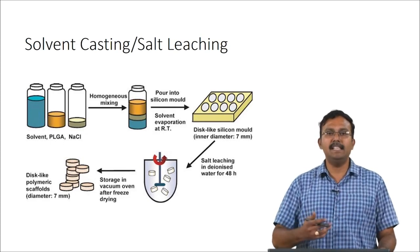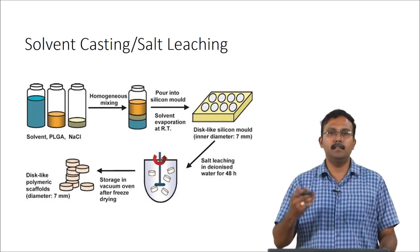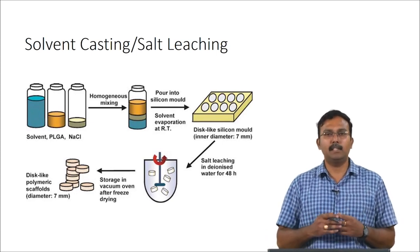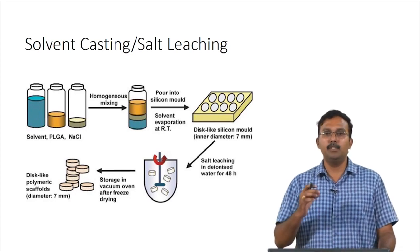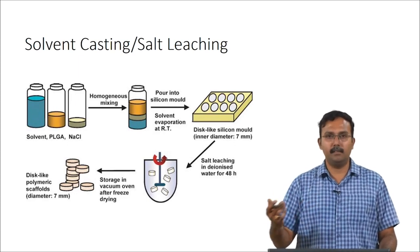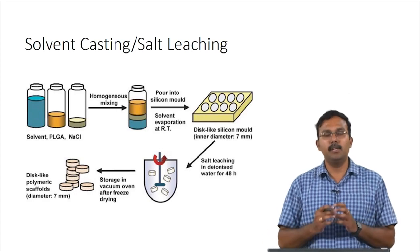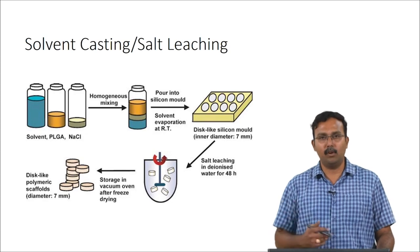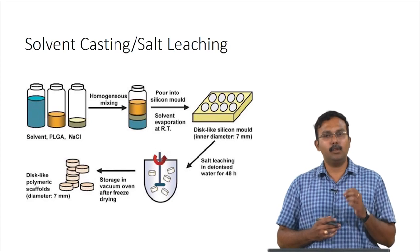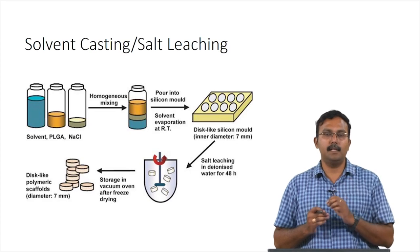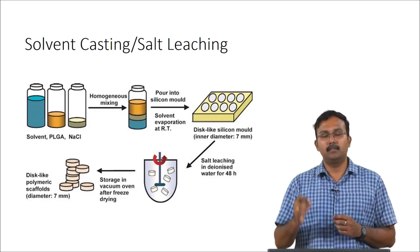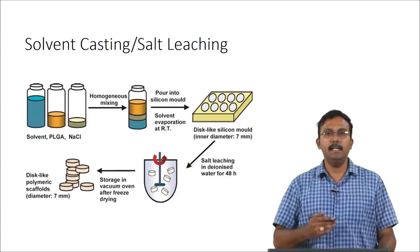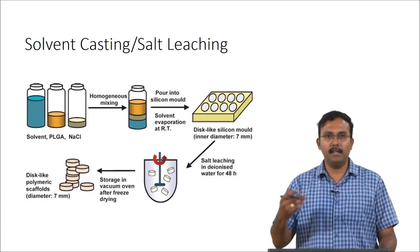The next step is to leach this salt using DI water. You place the salt-polymer scaffold into DI water and mix it for 48 hours. By doing this, the salt will actually get dissolved out and you will end up with a disc-shaped scaffold which is only the polymer. This can then be kept in a vacuum oven after freeze drying to remove all leftover water, giving you a scaffold prepared through solvent casting and salt leaching. How does this create a porous matrix? The salt which was present would have crystallized and formed salt crystals in the polymer blend. When this salt dissolves out or gets leached out, the volume occupied by these salt crystals now becomes pores. These porous structures are used for cell attachment and culture.